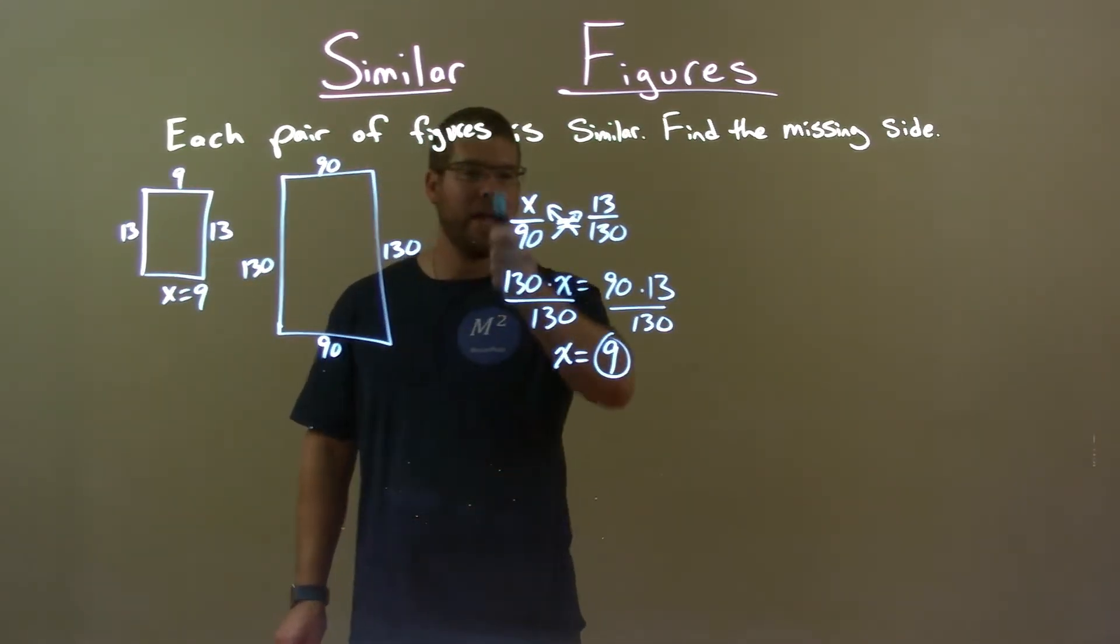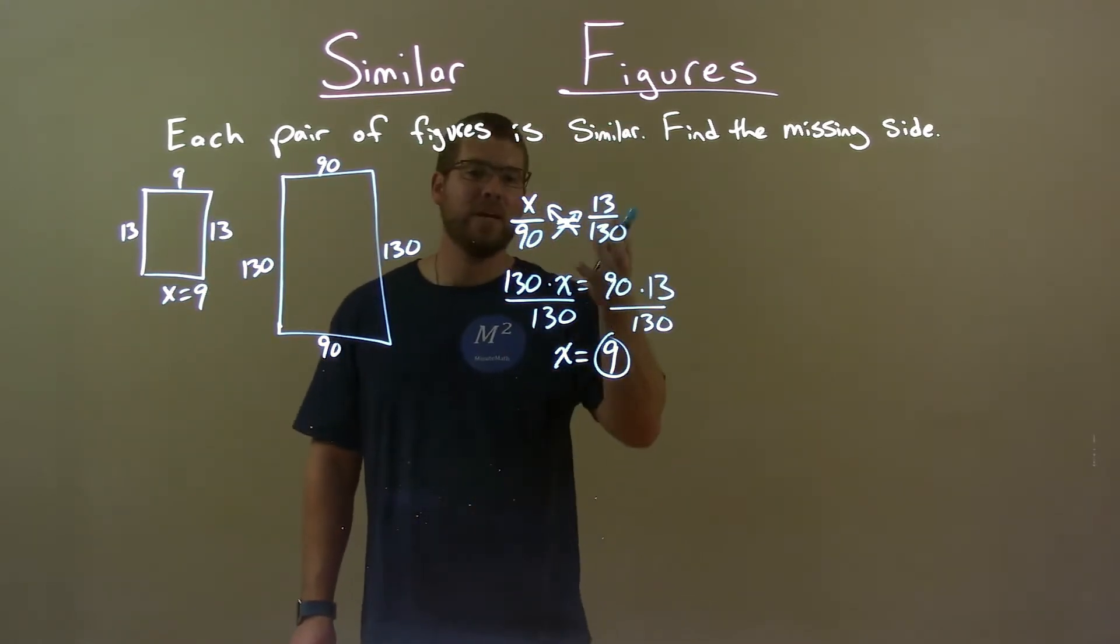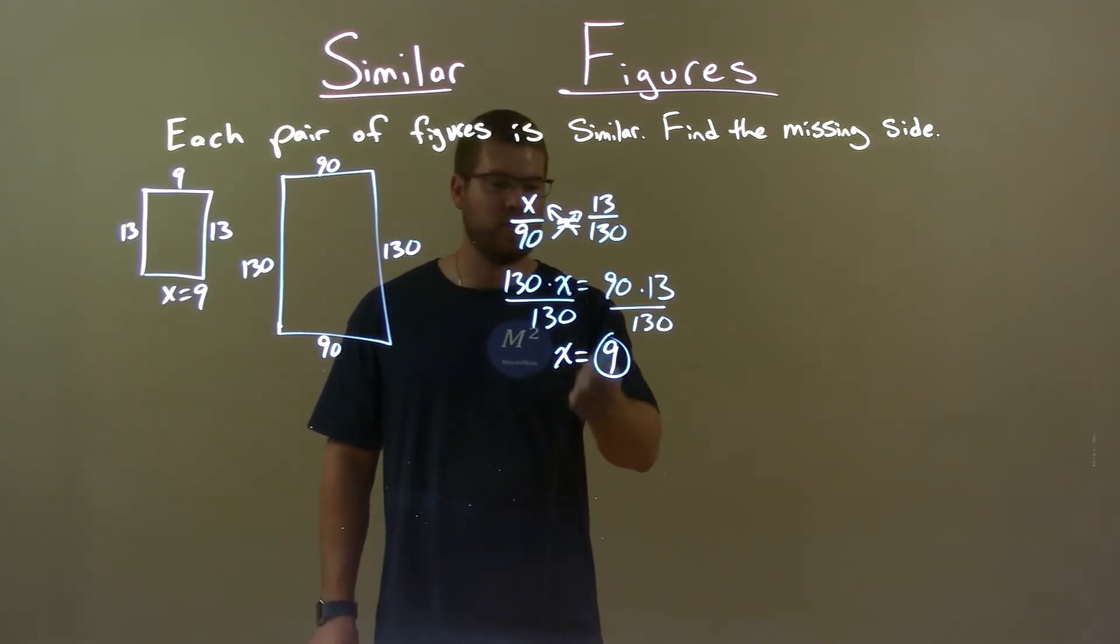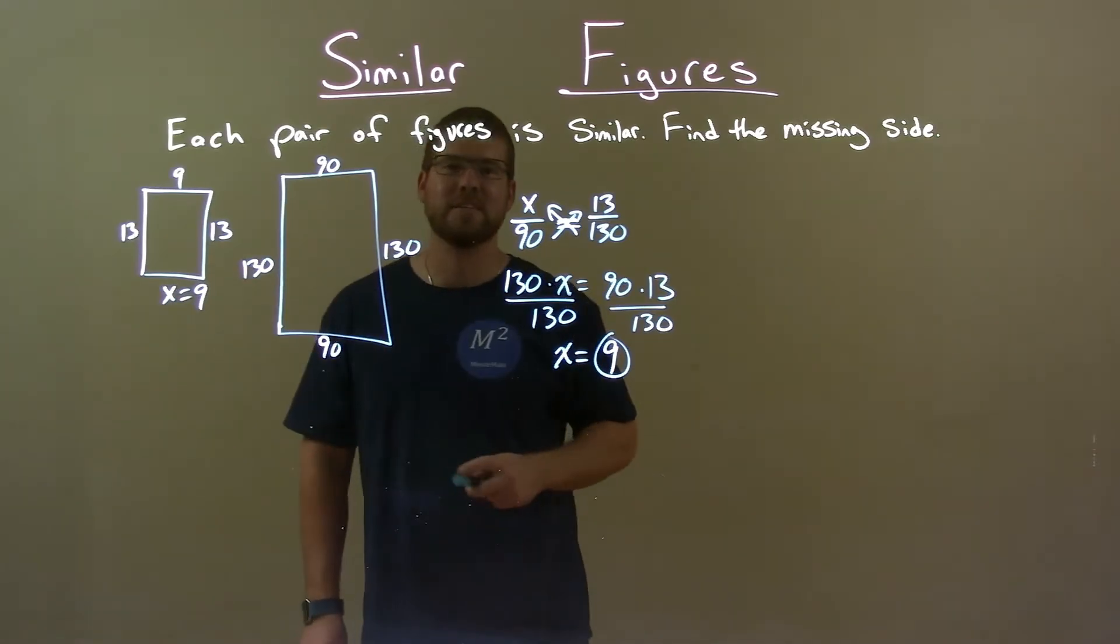So we created a proportion out of the side lengths, making sure we got the missing side length, and solved for our variable. Our answer is 9, so that side length right here is just 9.